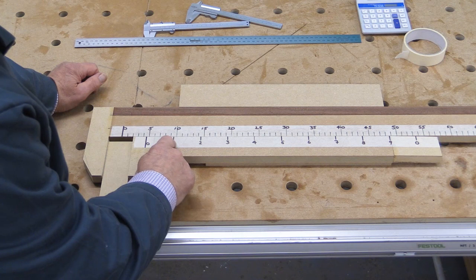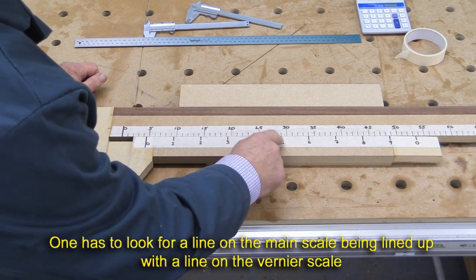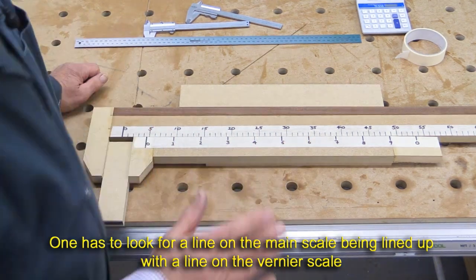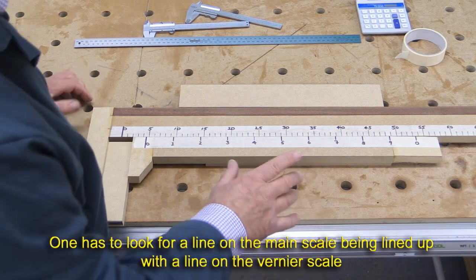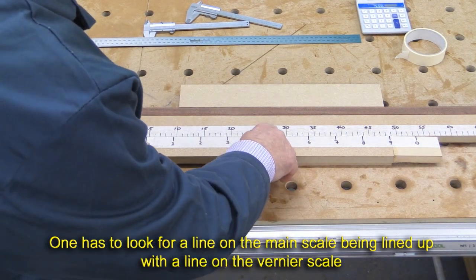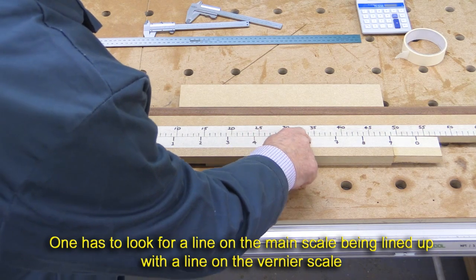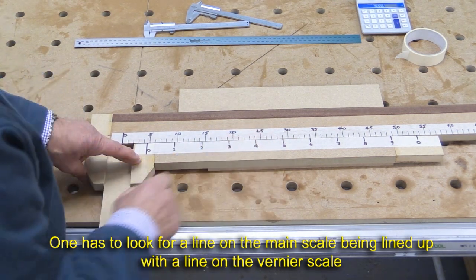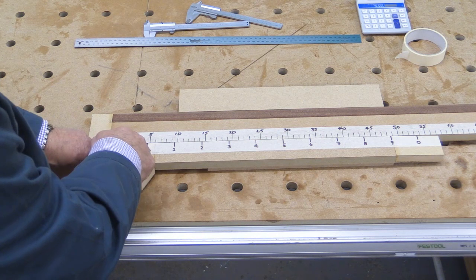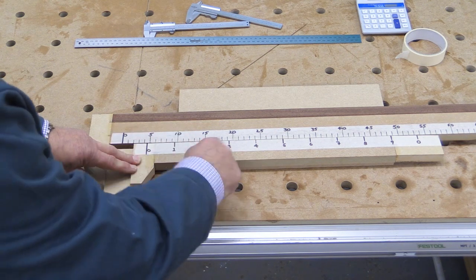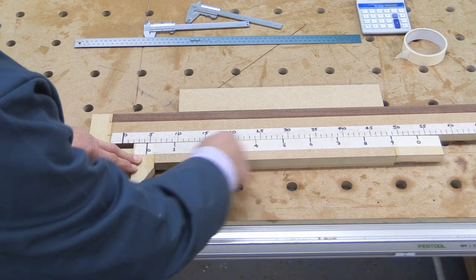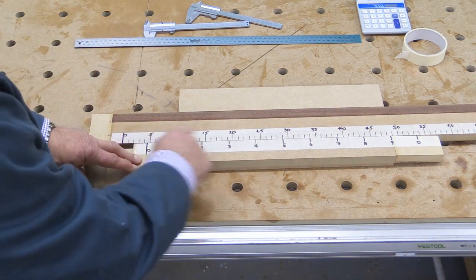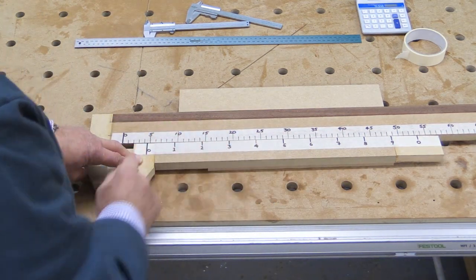What we're now going to do is look along here until one of these marks lines up with one of these marks. Bearing in mind this isn't the world's most accurate tool, it could be the 5 or it could be the 6. For sake of argument, let's say it's the 5 that's lined up. So this is 4 centimeters plus a half, which is 5 millimeters. That's 45 millimeters, or in our scale, 4.5 units or 4.5 centimeters.